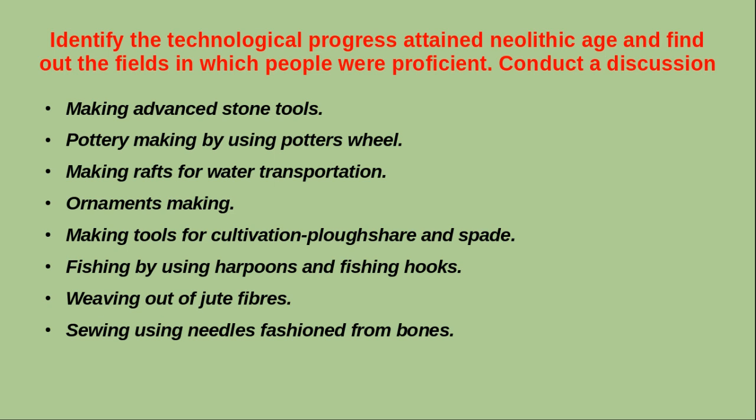Another activity given in the textbook: identify the technological progress attained in the Neolithic Age and find out the fields in which people were proficient. Making advanced stone tools, pottery making using a potter's wheel, making rafts for water transportation, ornament making, making tools for cultivation, fishing using harpoons and fishing hooks, weaving out of jute fibers, and sewing using needles fashioned from bones are the important skills attained by the people in the Neolithic period.